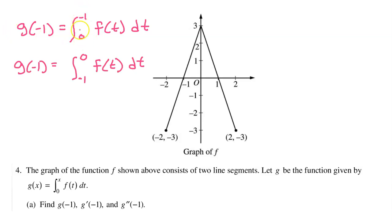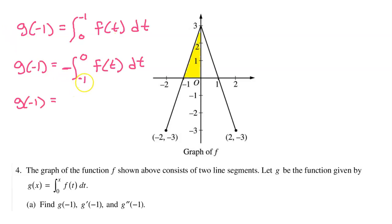Notice that the limits of integration are backwards compared to what we're used to. Normally, we like to have the limits from least to greatest, but here we have from zero to negative one, so that's backwards. We can switch the limits of integration and put them in the proper order from negative one to zero, as long as we remember that will cause the sign to change. We know that the integral from negative one to zero will be the area under the curve from negative one to zero — in other words, the area of this triangle.